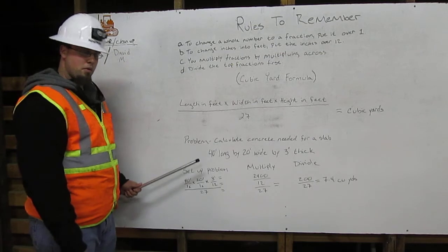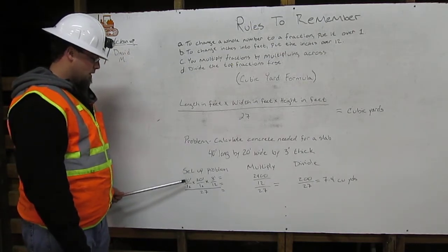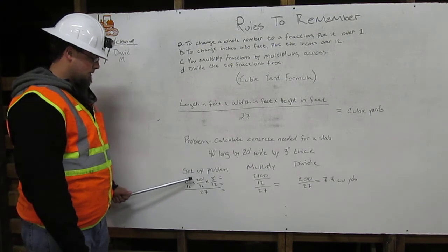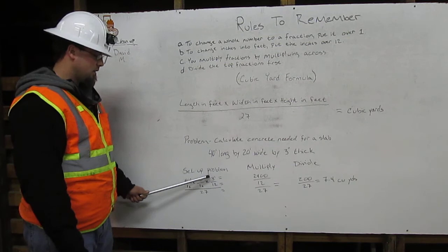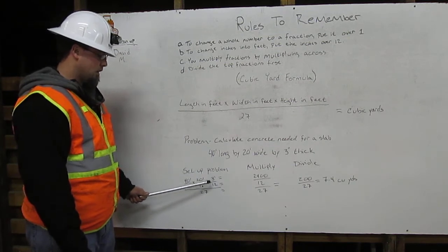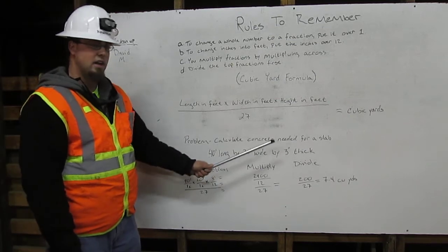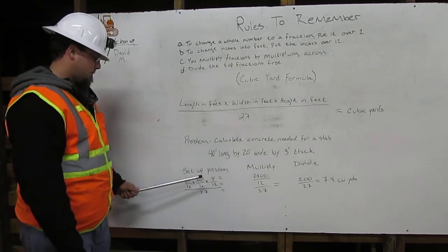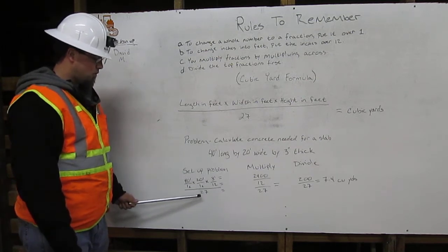We're going to set up our problem. We're going to have 40 feet over 1 times 20 feet over 1 times 3 feet over 12. We got the 3 feet by taking the 3 inches and putting it over 12. We take that and put that over 27.